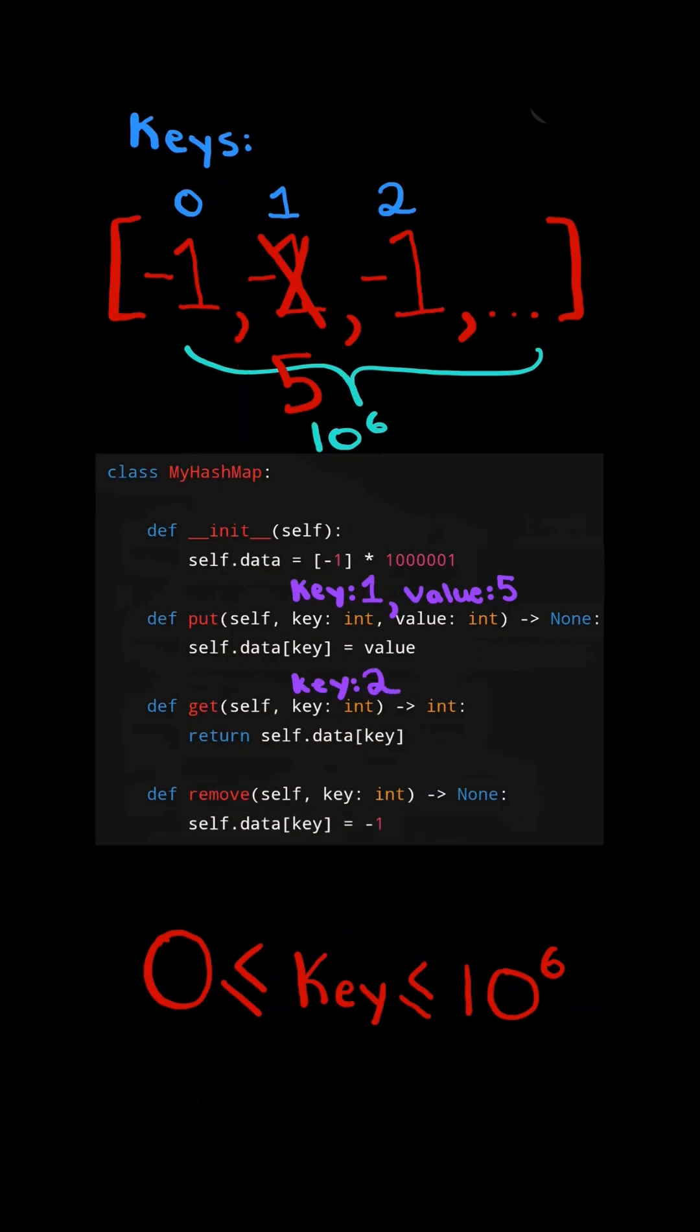And finally, let's move on to the remove method. Let's say we want to remove the key 1 from our map. We just update the value to negative 1. In theory, this approach works, but it is not scalable and wastes a ton of memory.